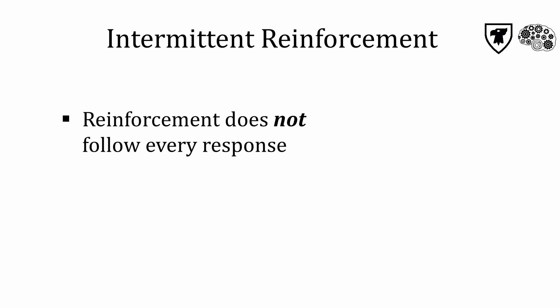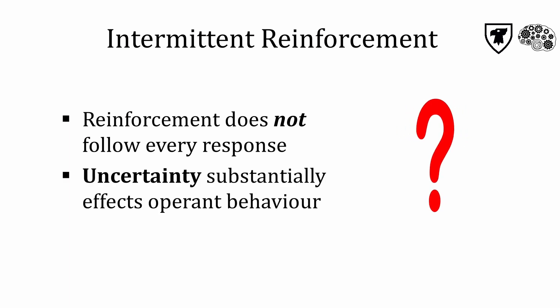Intermittent reinforcement is when reinforcement does not follow every single response. This type of schedule is also called partial reinforcement. As you will learn in this section, the element of uncertainty about whether or not the next attempt will result in a reward is a big part of intermittent reinforcement schedules.